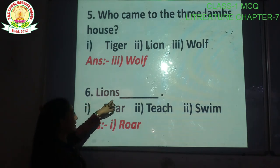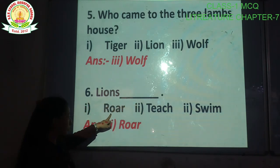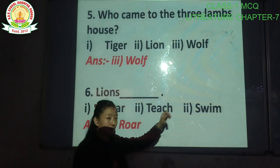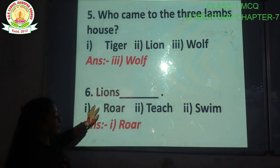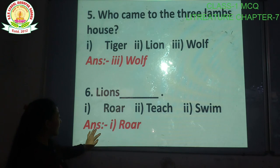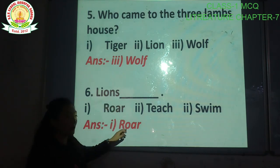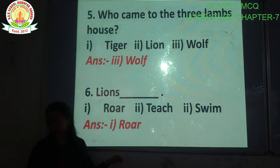Question number six: lions blank. Lion kya karta hai? Options: roar, teach, swim. What does a lion do? Our correct answer is option number one, roar. Lions roar. Gurrrata hai, lion hai na?